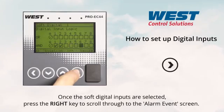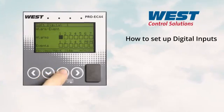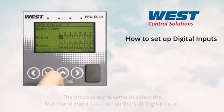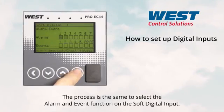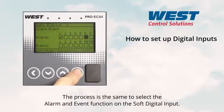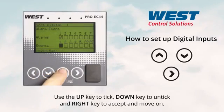Once the soft digital inputs are selected, press the right key to scroll through to the alarm event screen. The process is the same to select the alarm and event function on the soft digital inputs — use the up key to tick, down key to untick, and the right key to accept and move on.